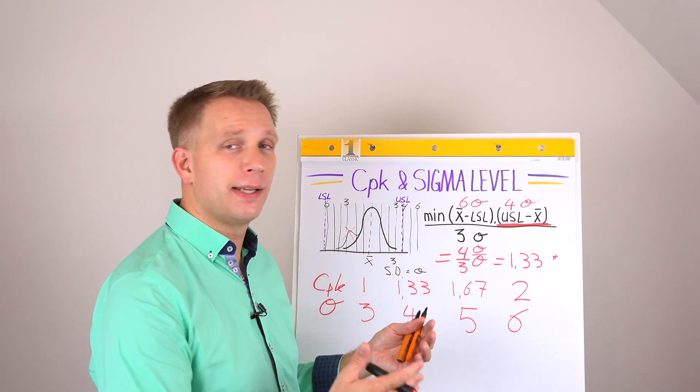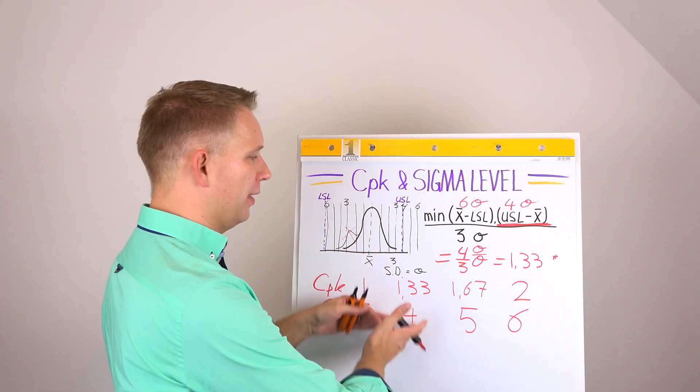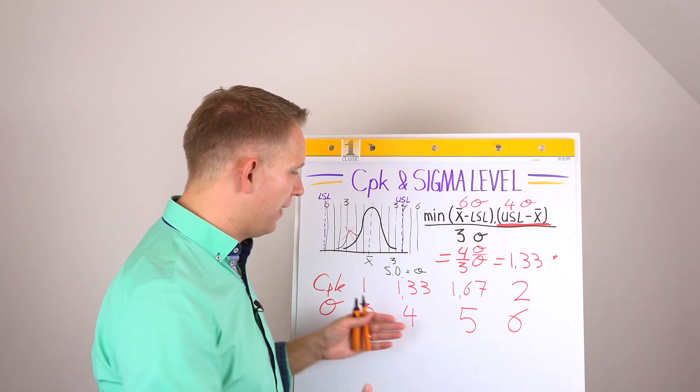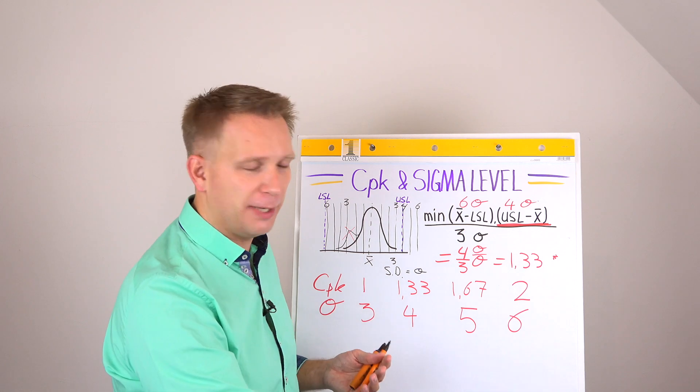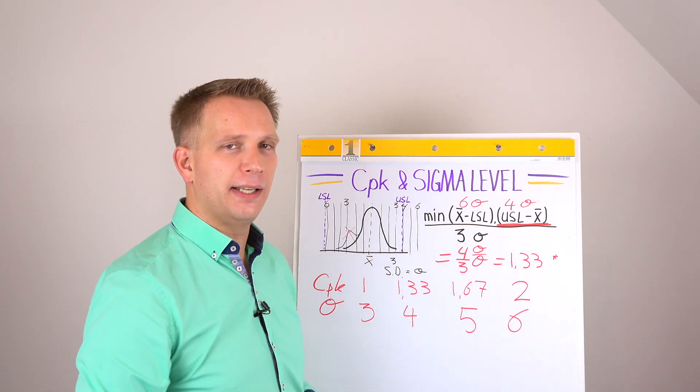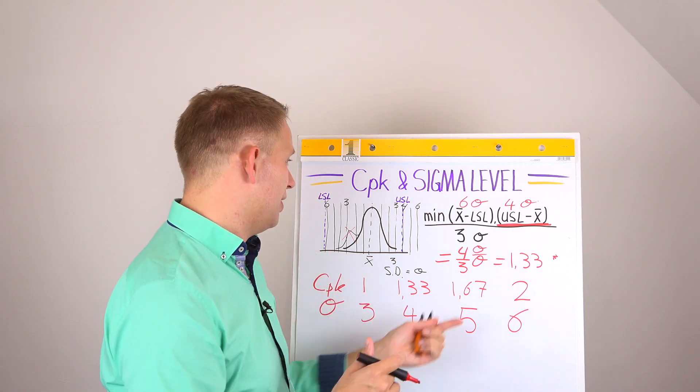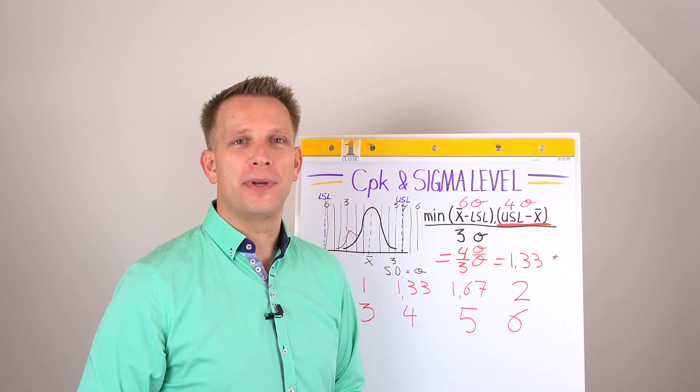But as you see, the sigma level, the CPK, it has a slightly different unit of measurement, but they are just the same. In fact, they will continue also. A CPK of 4 would be 12 sigma. So these scale linearly. And once you know what the conversion rate is, which is this three, you also know how to compare between those numbers.